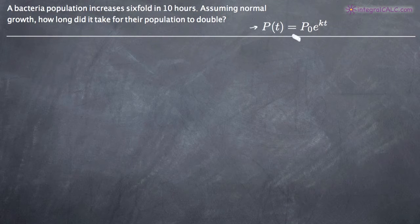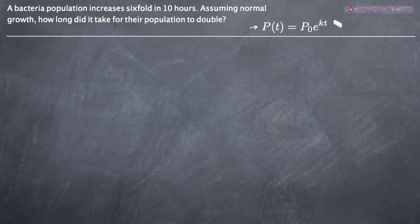So we need to use this equation here: p of t equals p sub-zero times e to the kt, to find how long it takes the population to double.